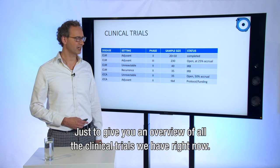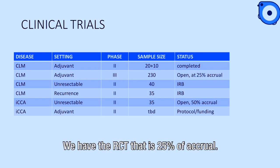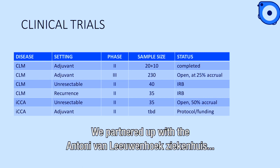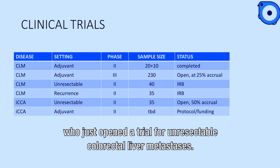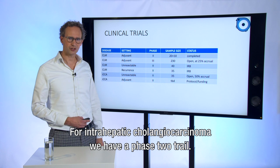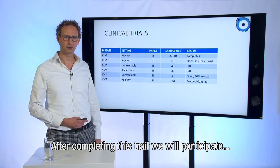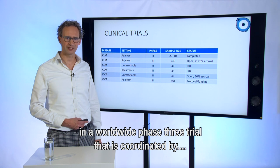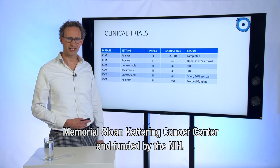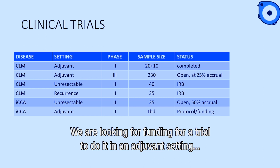To give you an overview of all clinical trials we have right now: for colorectal liver metastases we completed the adjuvant pilot trial and have the RCT at 25% accrual. We've partnered with the Anthony van Leeuwenhoek ziekenhuis, who just opened a trial for unresectable colorectal liver metastases, and my colleague Dirk Grunhagen has just started a trial for recurrent colorectal liver metastases. For intrahepatic cholangiocarcinoma, we have the phase 2 trial, and after completing it we will participate in a worldwide phase 3 trial coordinated by Memorial Sloan Kettering Cancer Center, funded by the NIH — we will be the only center in Europe participating. We're also looking for funding for a trial in the adjuvant setting of intrahepatic cholangiocarcinoma.